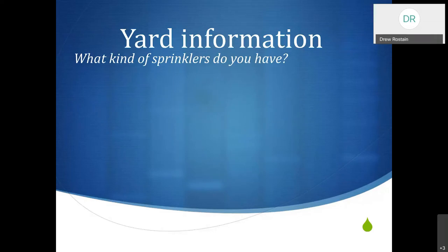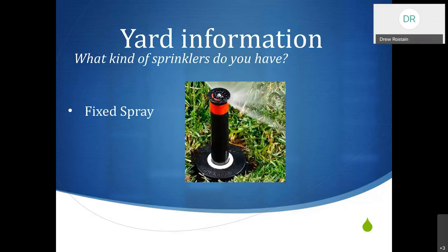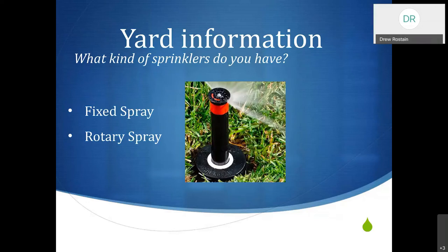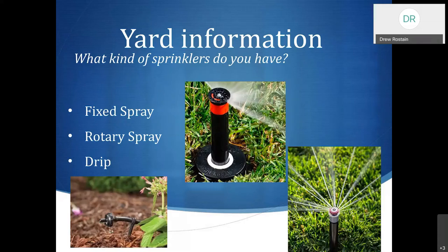The next piece of information we need is what kind of sprinklers do you have. The three main types you'll see in most homes: a fixed spray, which pops up with a single pattern; a rotary spray or rotating, which has single streams of water that rotate and puts out water quite a bit slower than a fixed spray; and drip irrigation. It's important to have drip emitters that are pressure compensating and low flow. High-flow or adjustable drip emitters that have a stream of water coming out will be much more challenging to program and for the controller to optimize watering.